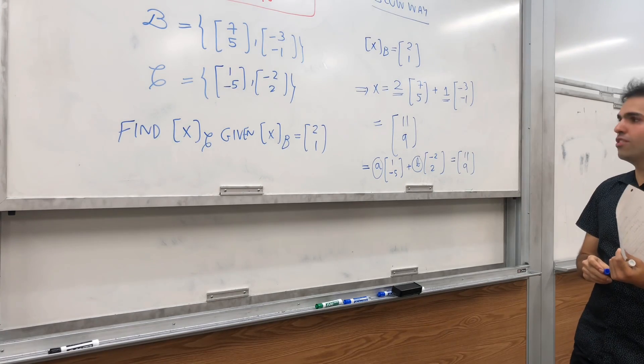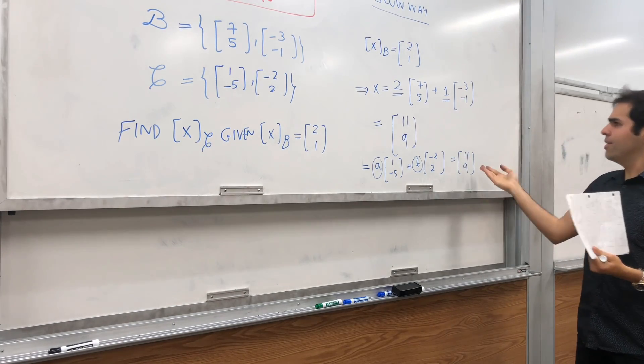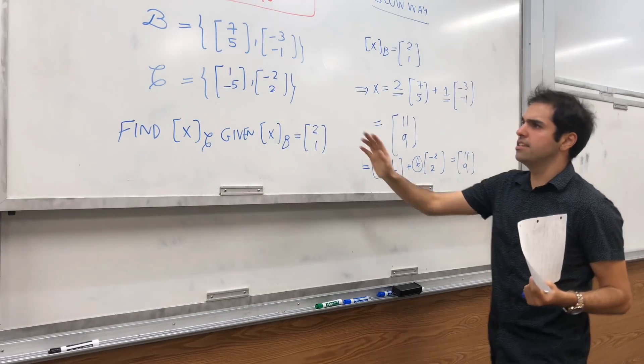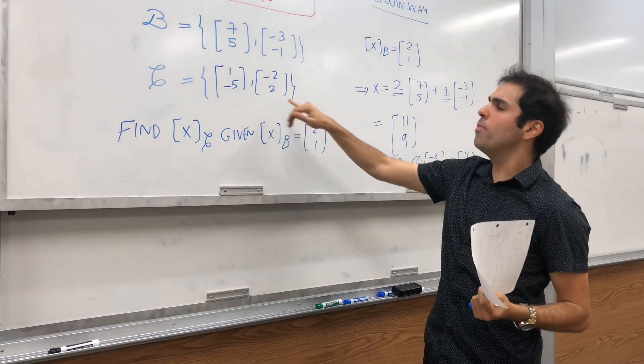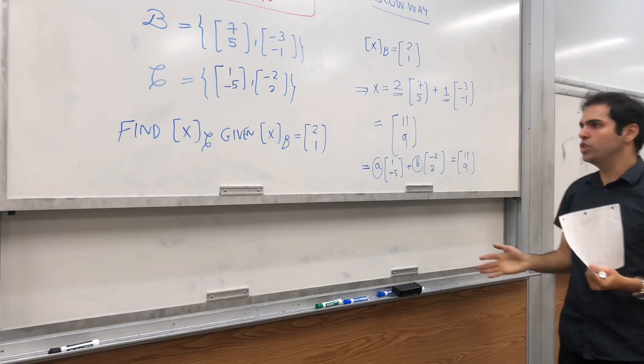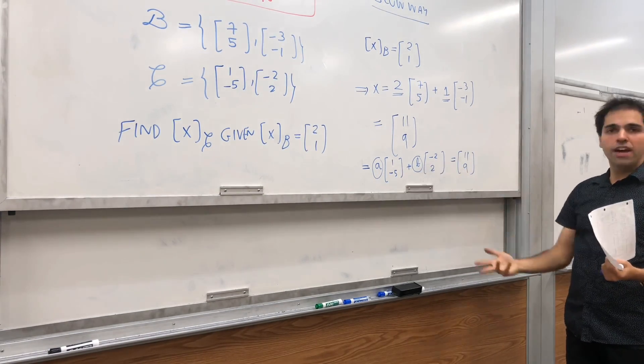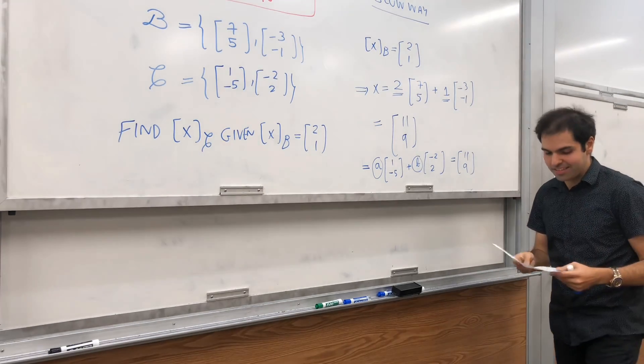And again, that's just by definition of coordinates. What XC means, means that how many steps in this first direction, and how many steps in the second direction do you have to go to reach the vector 11, 9. And so, if you find those directions, it gives you XC.